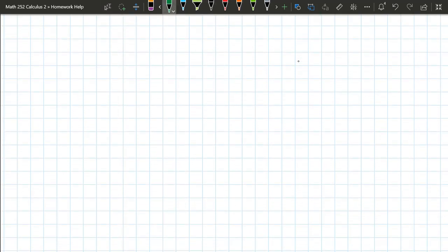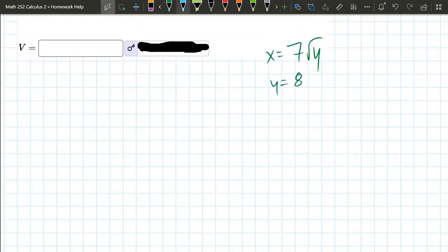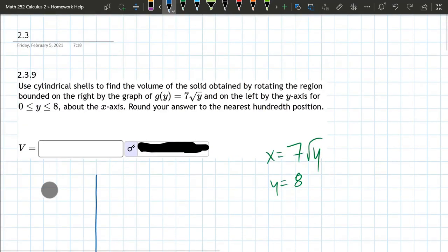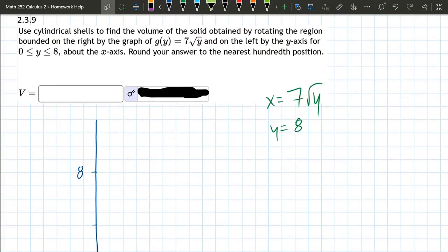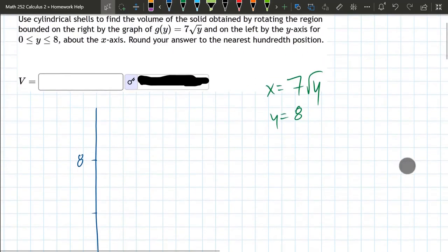We're going to need quite a bit of positive y-axis. And went up to 8, 4, 8 right there. So 0 to 8 and 7, x = 7√y.